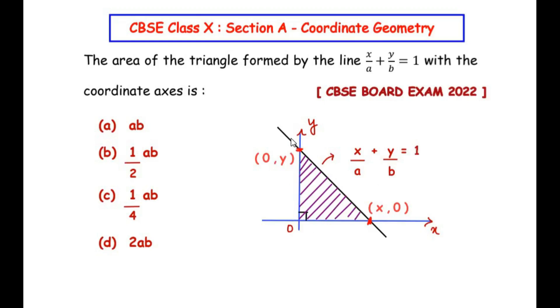Now as we can see, the line makes a triangle with the x-axis and the y-axis. When the line cuts the x-axis, the coordinate becomes (x, 0), and when it cuts the y-axis, the coordinate becomes (0, y). In this question, we need to find out the area of the triangle formed by this line with the coordinate axes. So for that, first we need to find out the value of x on the x-axis and the value of y on the y-axis.